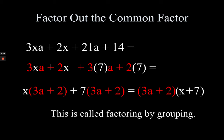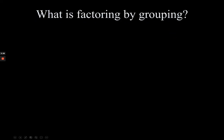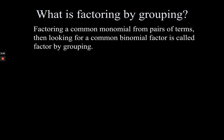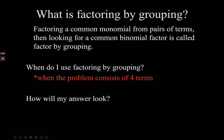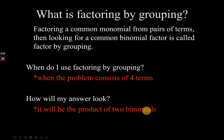Factoring by grouping involves a lot of common factoring. The main concept: when factoring a common monomial from pairs of terms and then looking for a common binomial factor, that is called factoring by grouping. You use it when the expression has four terms, and the answer is usually a product of two binomials — just like the result of a FOIL method.